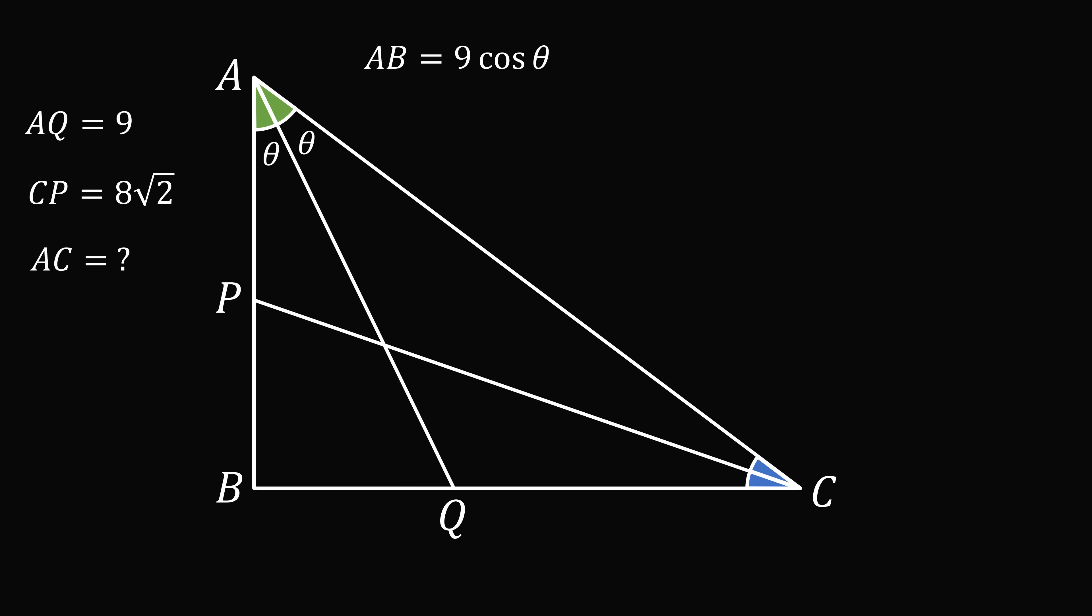Now, since triangle ABC is a right-angled triangle, angle C and angle A add up to 90 degrees. This means C is equal to 90 degrees minus 2 theta. Since we have an angle bisector, each of these angles will be half of that, so each of them will be equal to 45 degrees minus theta.